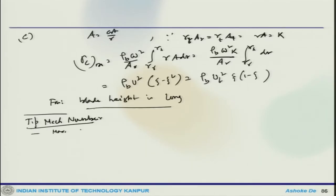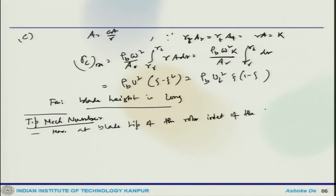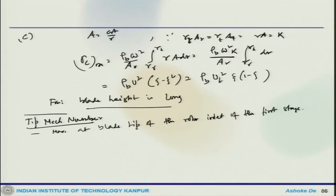The maximum Mach number is essentially at the blade tip of the rotor inlet of the first stage. This is due to the maximum value of the relative speed W1 and the maximum static temperature of the sonic inlet. For the first stage, the axial velocity is equal to the inlet absolute velocity and has a constant value along the annulus.